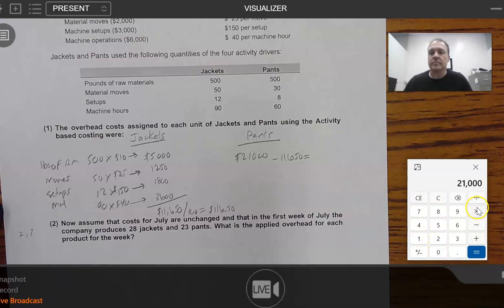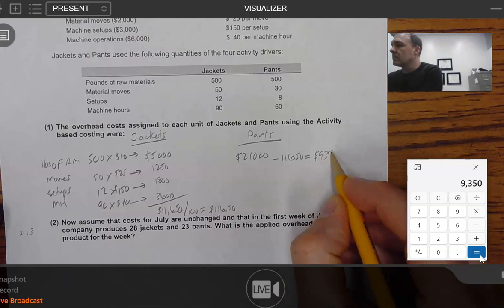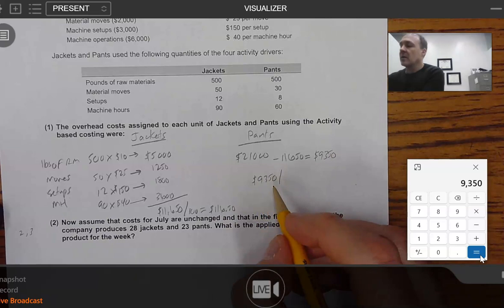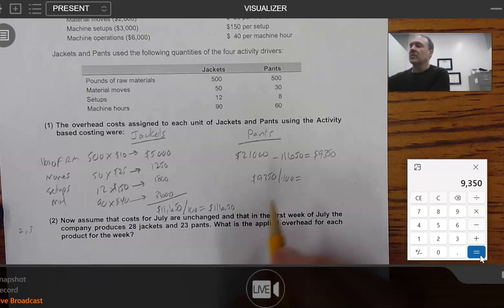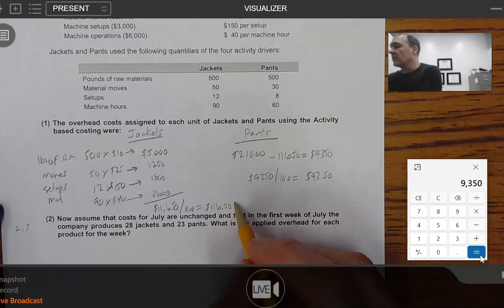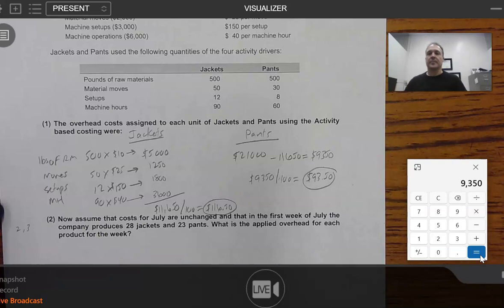And again, if you were doing this like in an online homework or something and you had to input all of these numbers into a little box or something like that, this shortcut's not going to work. All it'll help you do is check your work. So, $21,000 minus $11,650 is $9,350. And then $9,350 divided by 100, pants should be $93.50. So, we've got $116.50 and $93.50.